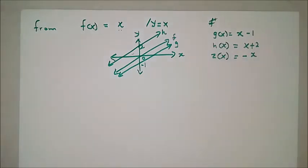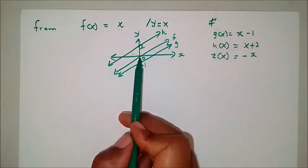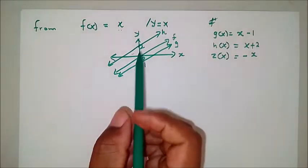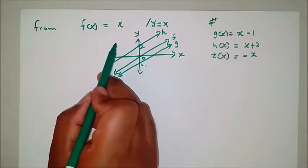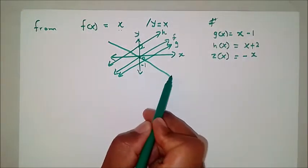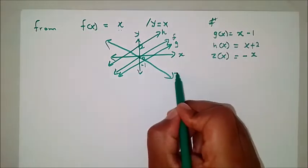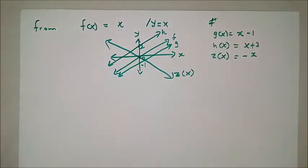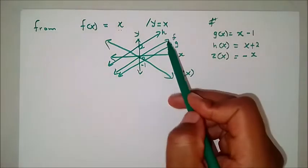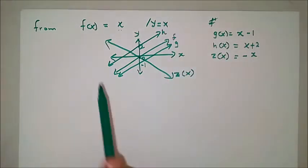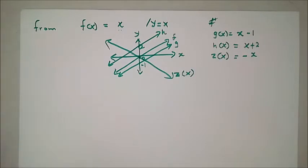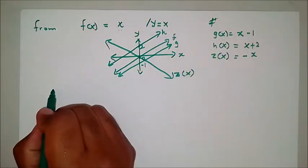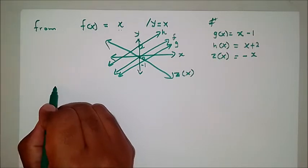What happens when we have z(x) = -x? This graph is reflected — specifically, the graph of f(x) was reflected about the x-axis to give us z(x).